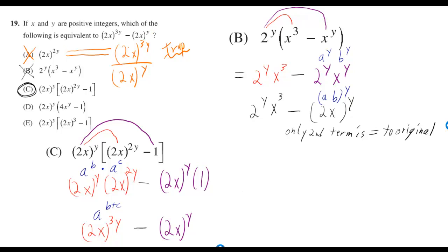It's not answer choice A. Answer choice A has an exponent of 2y, which is what you would get if you subtract 3y minus y, but you would only subtract exponents if you had division of your two terms. Instead, we have subtraction, so we don't get to use that rule. So that's the trap answer.